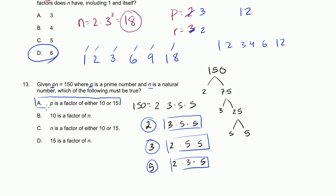Let's check the other choices. One says 10 is a factor of n — but when p equals 2, n is 75, and 10 is not a factor of 75. Another says n is a factor of either 10 or 15 — but our n values like 75 are larger than 10 or 15, so that's wrong. And 15 is a factor of n: when p equals 5, n is 2 times 5 times 5, which is 50, and 15 is not a factor of 50. So our first answer is confirmed: p is a factor of either 10 or 15.